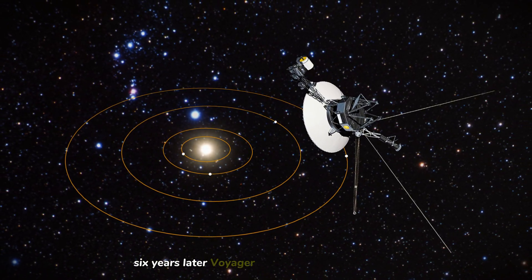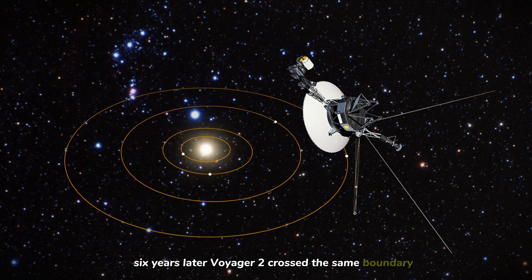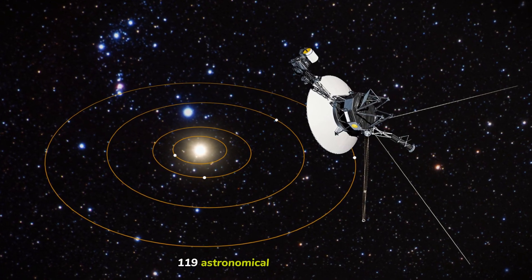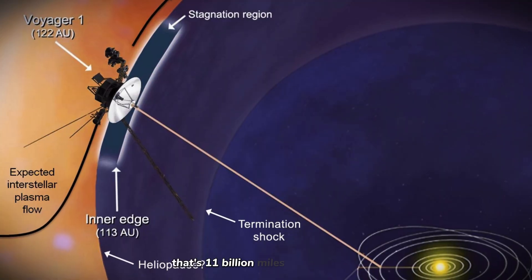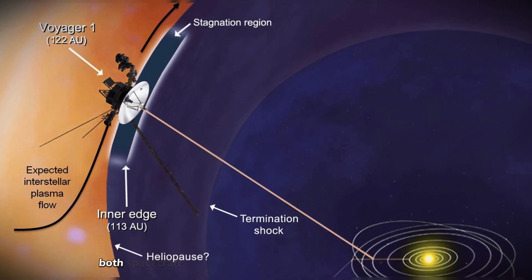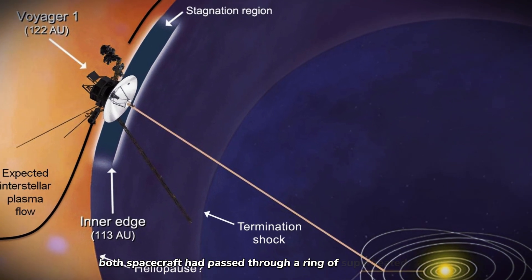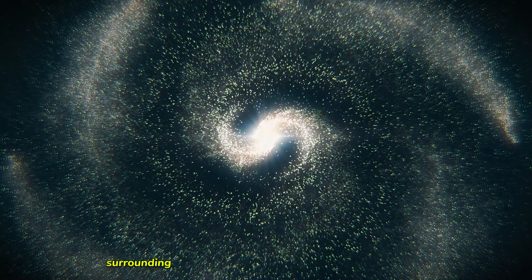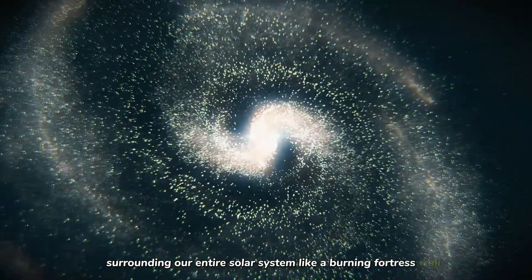Six years later, Voyager 2 crossed the same boundary, 119 astronomical units from the sun, that's 11 billion miles, and confirmed it. The readings were identical. Both spacecraft had passed through a ring of superheated plasma surrounding our entire solar system like a burning fortress wall.